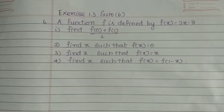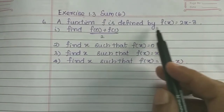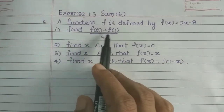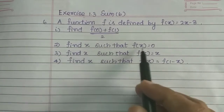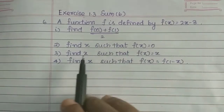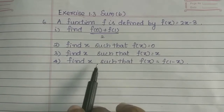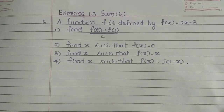Hi students. Exercise 1.3, problem 6. A function f is defined by f(x) = 2x - 3. Find f(0) + f(1)/2. Find x such that f(x) = 0. Find x such that f(x) = x. Then find x such that f(x) = f(1 - x).